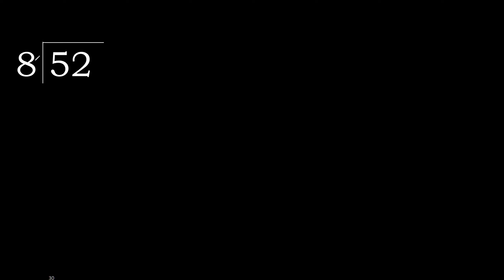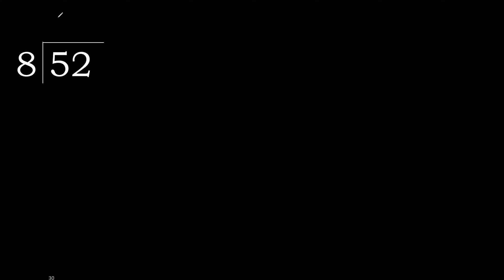52 divided by 8. 5 is less, therefore next. 52 is not less, therefore with 52: 8 multiply by which number is nearest to 52 but not greater. 8 multiply by 7 — 56 is greater. Multiply by 6 — 48 is not greater.